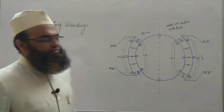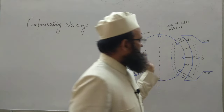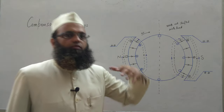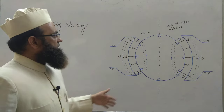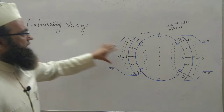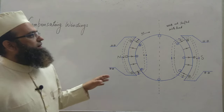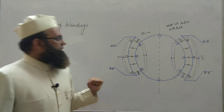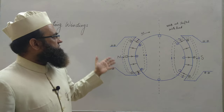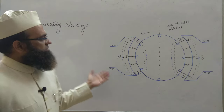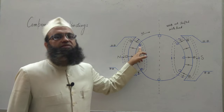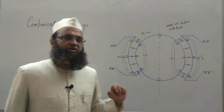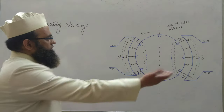Compensating windings are placed parallel to the armature conductors on the two pole faces for a two-pole machine, four pole faces for a four-pole machine, and so on. Slots are cut on the pole faces and compensating windings are placed there. These windings are connected in series with the armature winding so as to have the polarity of the compensating winding conductors just opposite to that of the adjacent armature conductors, to cancel out the effect of armature reaction.